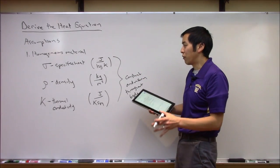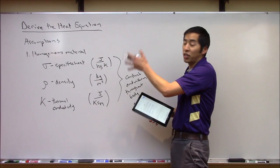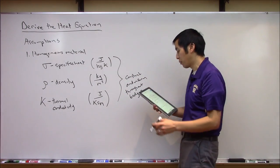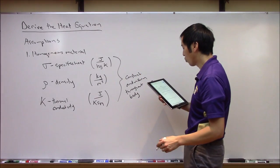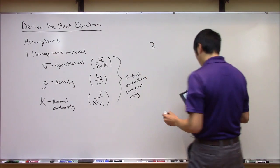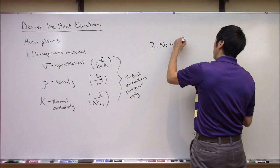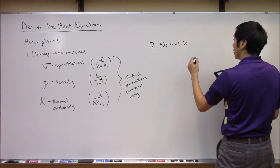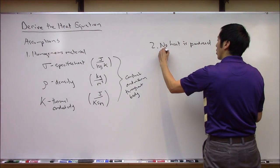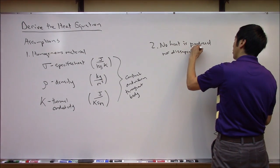I don't really know what happens near absolute zero or at extreme temperatures, but in the ranges we're talking about, this is probably reasonable. That's assumption one. Assumption two — this is a big one — let's assume that no heat is produced nor disappears inside the body.